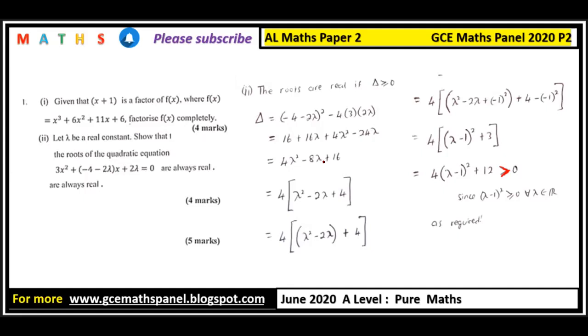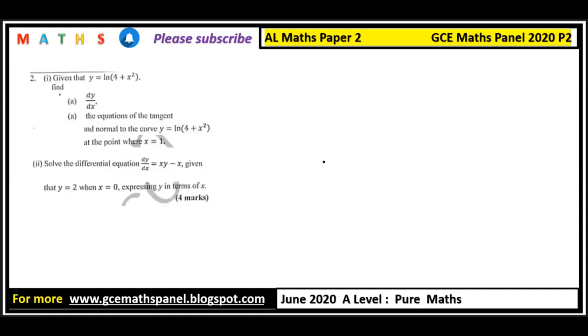Let's now look at the second question. Given that y = ln(4 + x²), find dy/dx. And the second part of it: the equations of the tangent and normal to the curve y = ln(4 + x²) at the point where x equals 1. So since this is a logarithmic function, the derivative is given by the derivative of the core divided by the core. So the core here actually is this 4 + x². The derivative of this core gives us 2x, so divided by the core itself, so 2x/(4 + x²).